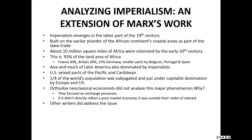First, a little background. Imperialism emerges in the latter part of the 19th century. This is built on the earlier plunder of the African continent's coastal areas as part of the slave trade, though it's a little different, because imperialism reaches deep into the heart of other countries and seizes the produce there, as opposed to simply devastating a continent through the slave trade. The slave trade was more of a 17th and 18th century process, while imperialism is more of a system that emerges in the latter part of the 19th century.